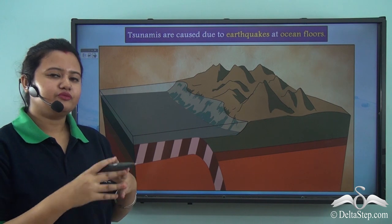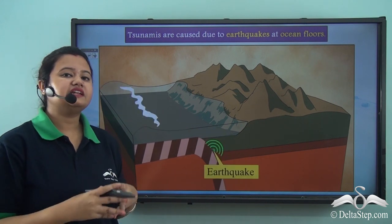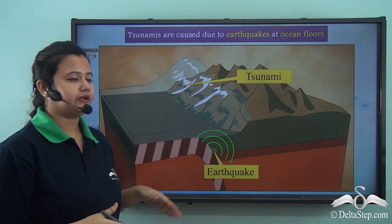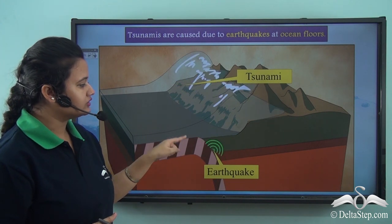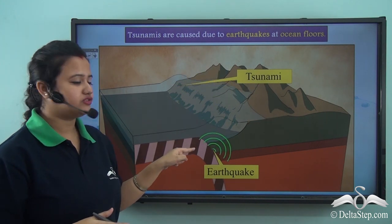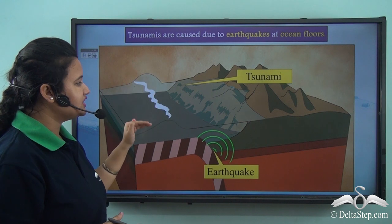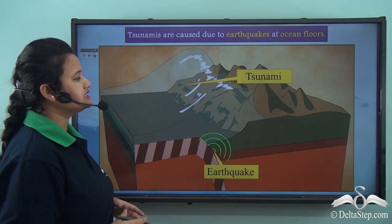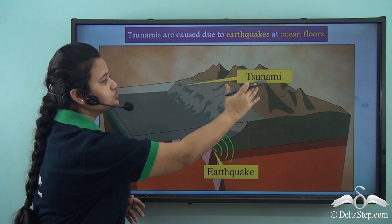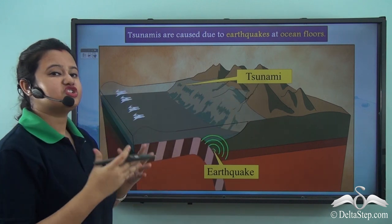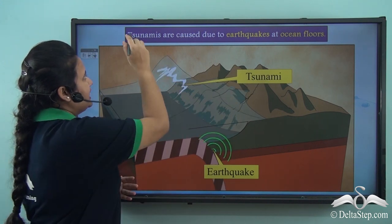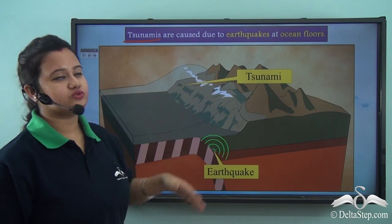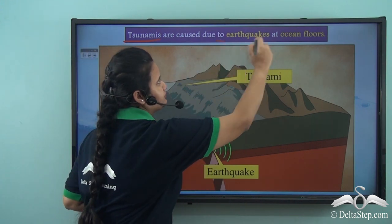Apart from wind, another factor that leads to the formation of waves is an earthquake. If an earthquake occurs at sea floors or in the ocean, it shifts the water column lying above it, and this leads to the formation of huge, gigantic waves which are known as tsunamis. So tsunamis are caused due to earthquakes at the ocean floor.